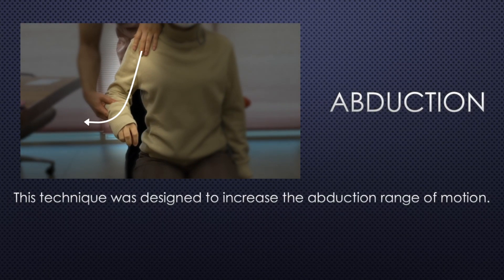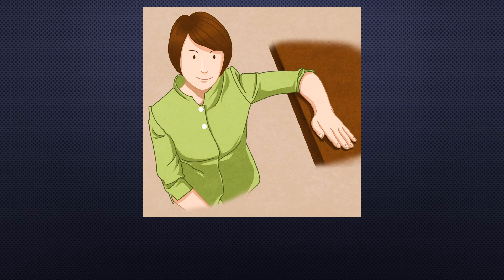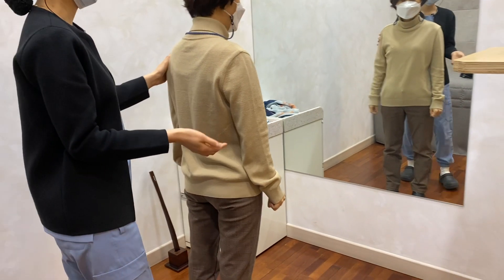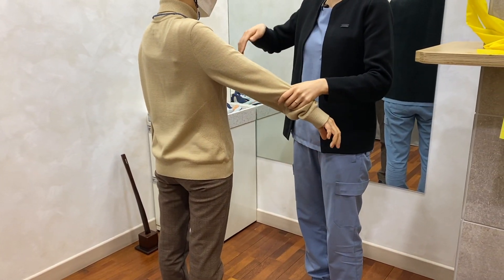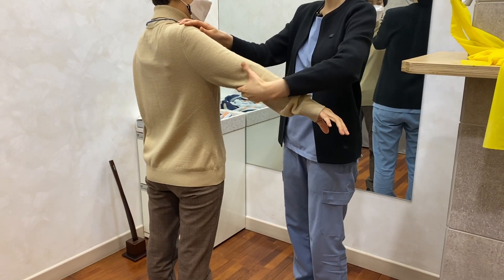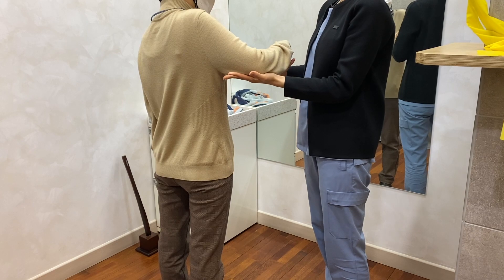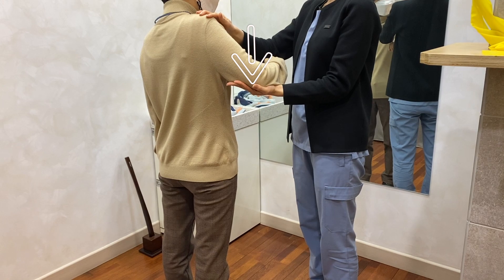This technique was designed to increase the abduction range of motion. Choose a place where you can put your arms around a desk or table and rest your arm on it. Raise the arm as high as possible to the extent that there is no pain. Please stabilize your body. Gently and slowly press the elbow downward to contract the muscle.